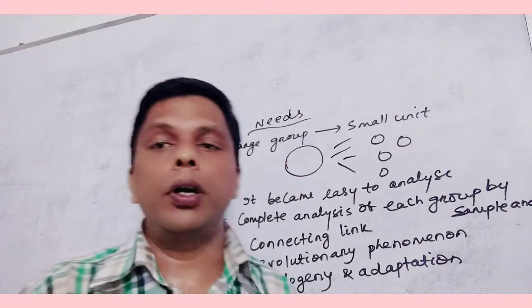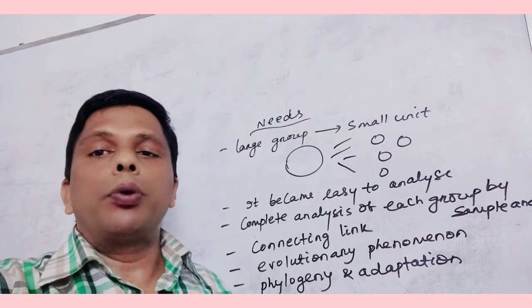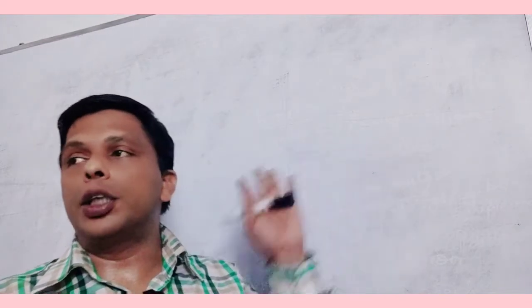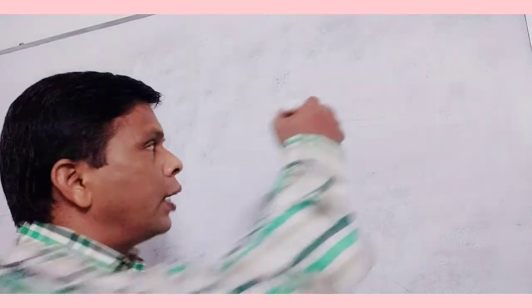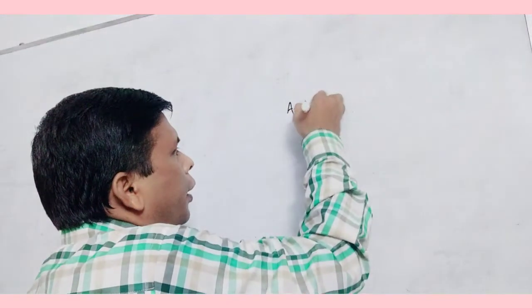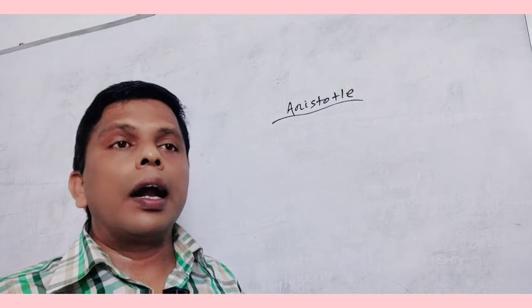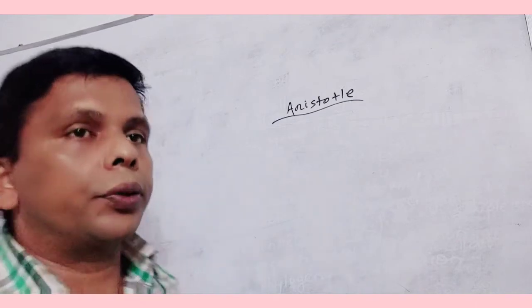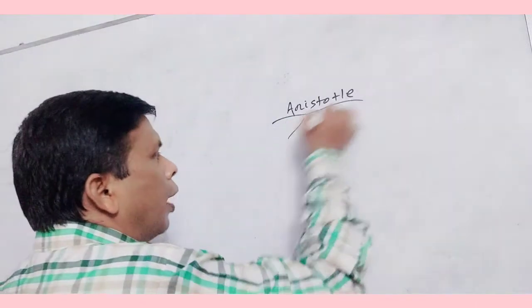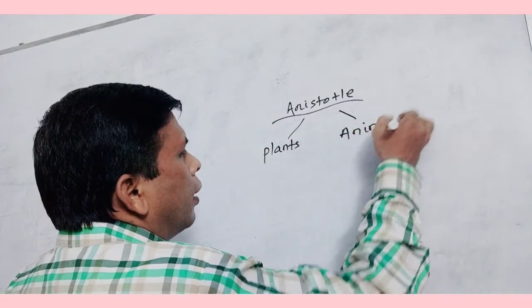These are the basic needs for classifying living organisms. The classification of living organisms was first given by Aristotle. Aristotle classified the whole living system into two groups: Planta and Animalia — plants and animals.